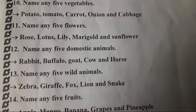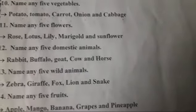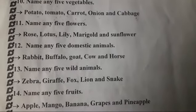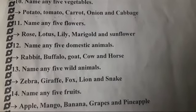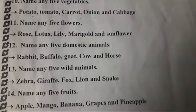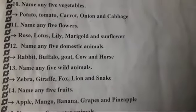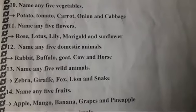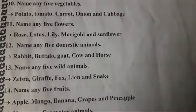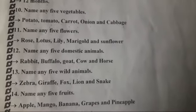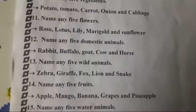Name any five domestic animals. Domestic animals yani children jo hamare ghar ke aaspaas dikhaai dete hain — animals jo rehte hain, jo humaari routine life mein use bhi hote hain, unhe kya bolte hain? Domestic animals. Jaise ki rabbit, buffalo, goat, cow and horse — woh kya hain? Domestic animals.